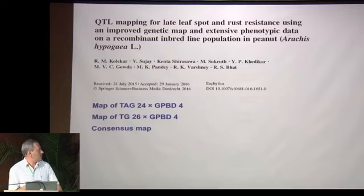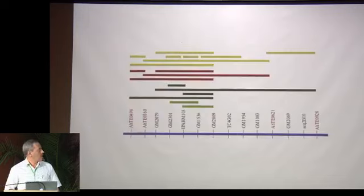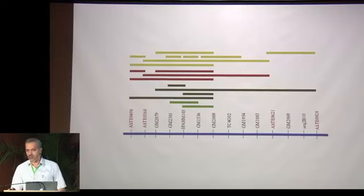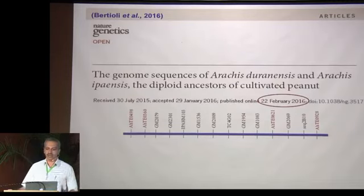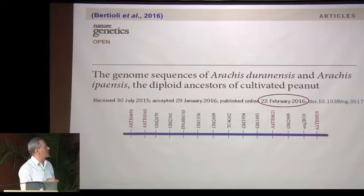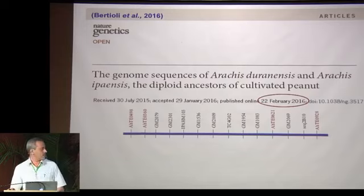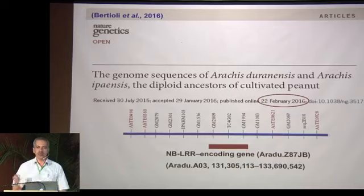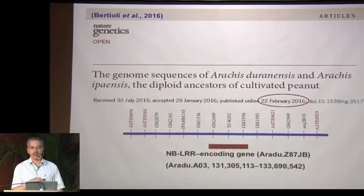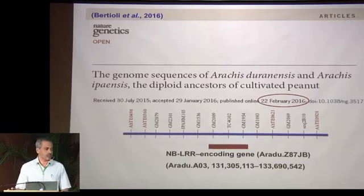Our latest publication covers construction of maps for TAG-24 × GPBD-4 and TG-26 × GPBD-4, and a consensus map. This is the latest map showing the same genomic region on A03 chromosome governing LLS and rust resistance — these are the QTLs identified. A paper by Bertioli and associates in 2016, when they sequenced the parental A and B genomes (duranensis and ipaensis), found that this same region contains an NBS-LRR gene — an R gene — giving strength to our work that we are moving in the right direction.